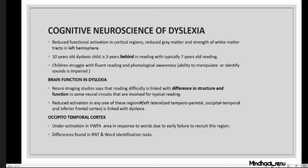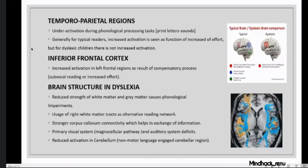We can see a clear difference in structure and function in dyslexia. There is reduced activation in the temporoparietal area — where typical reading shows increased activation, dyslexia shows under-activation. Because of this, they depend more on the inferior frontal cortex. This makes it very difficult for them to identify words, do rapid naming, and retrieve visual word form images quickly. Instead, they struggle through phonological decoding, which depends on the temporoparietal cortex — and there is under-activation there as well.